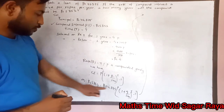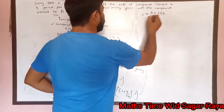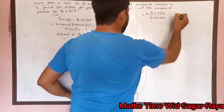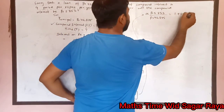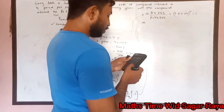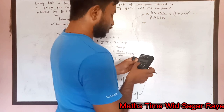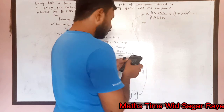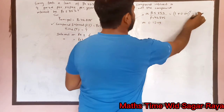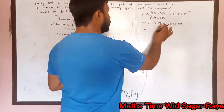Dividing both sides: 5,853 ÷ 46,875 = (1.04)^t − 1. Calculating 5,853 ÷ 46,875 gives 0.1249. Bringing the minus one to the other side, we get 1 + 0.1249 = (1.04)^t, which simplifies to 1.1249 = (1.04)^t.